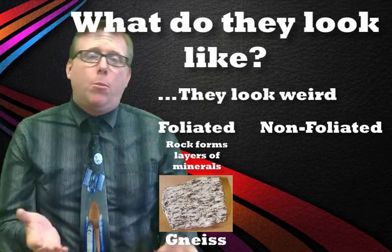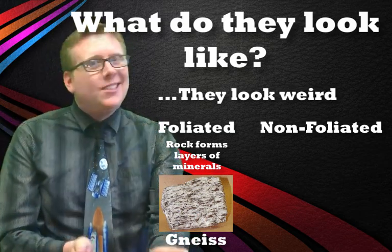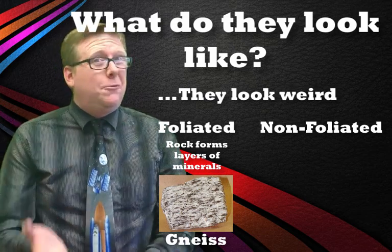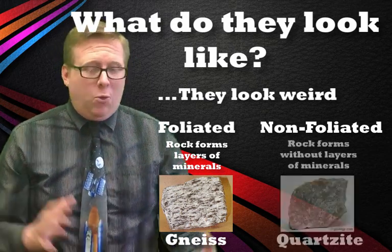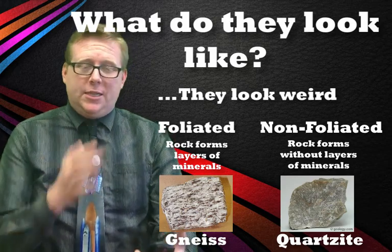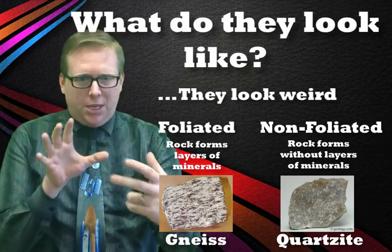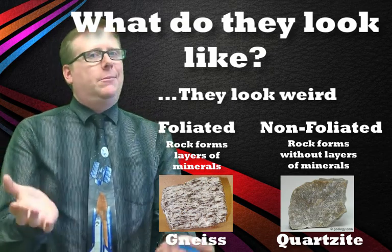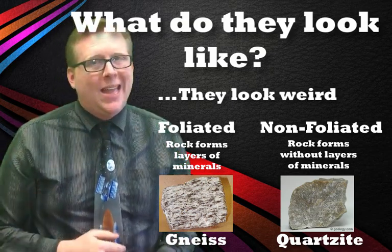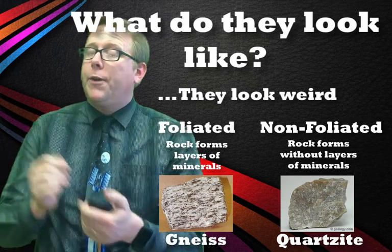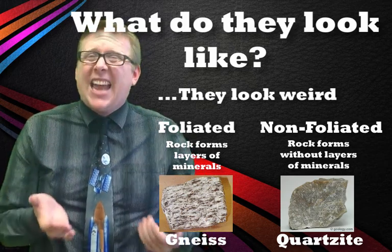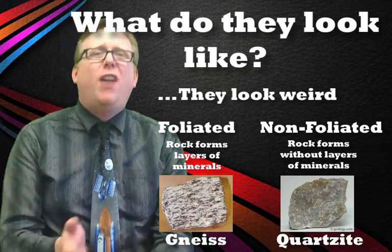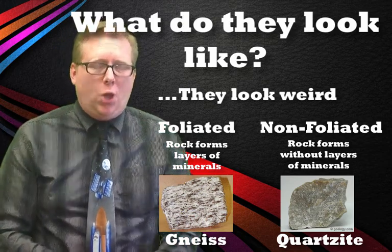Not all metamorphic rocks form layers so easily. For instance, sandstone doesn't form a nicely foliated rock. When you take that sedimentary rock and heat and pressurize it, it forms something called quartzite. It doesn't have any layers — it's just a jumble of minerals. As a result, it's a non-foliated metamorphic rock. So when you're out finding a rock, you can tell if it's metamorphic by looking for those things.